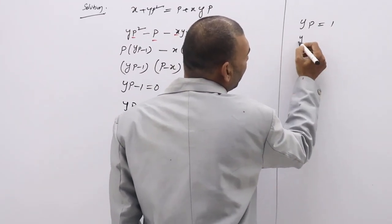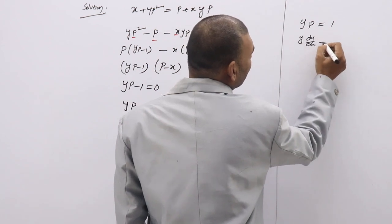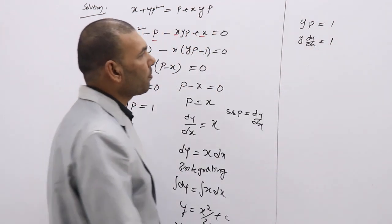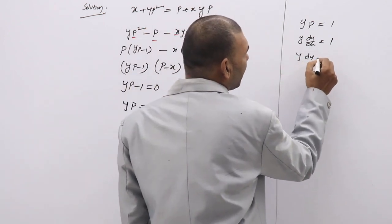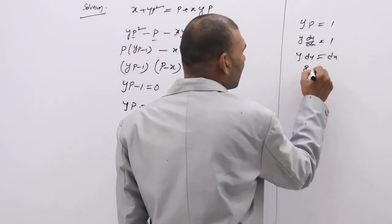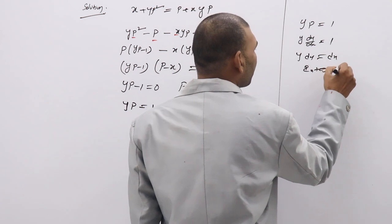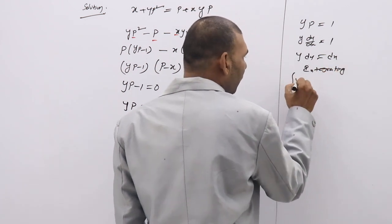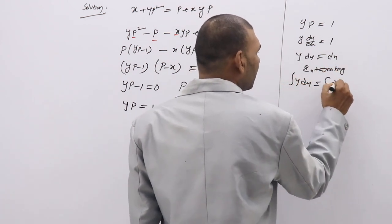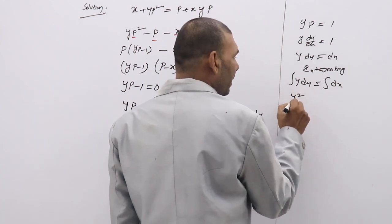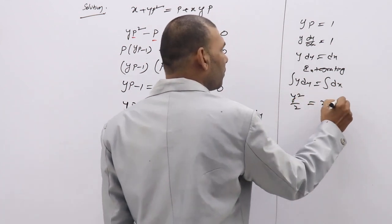Write in the place of p, dy by dx. y into dy by dx equal to 1. y dy equal to dx. Integrating, what do you get? Integral y dy equal to integral dx. Integral y dy is y squared by 2.